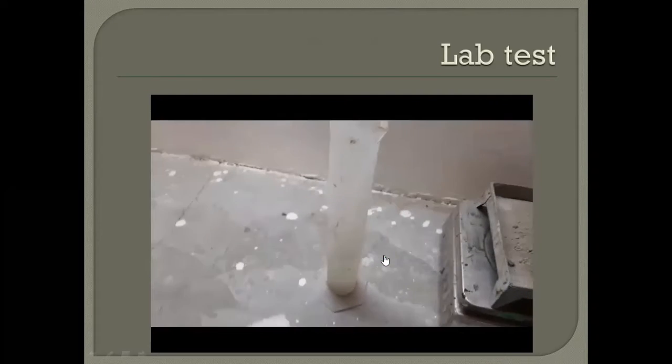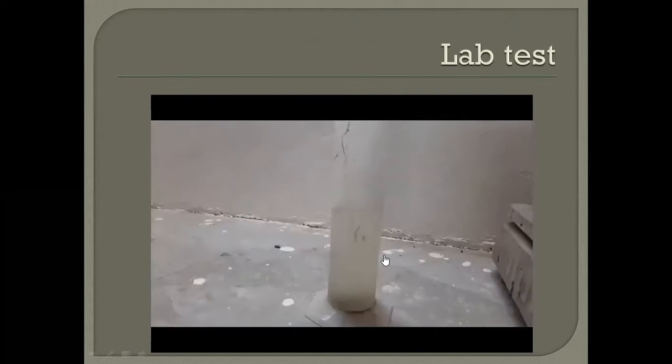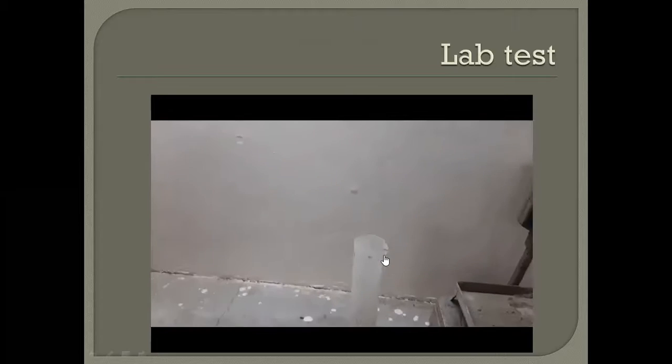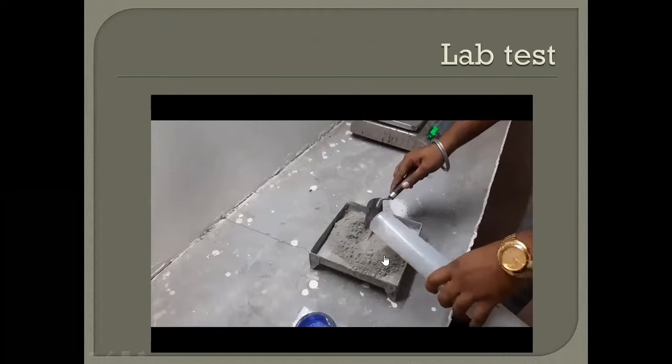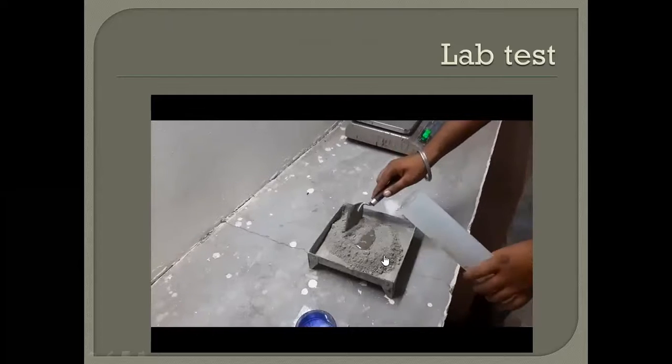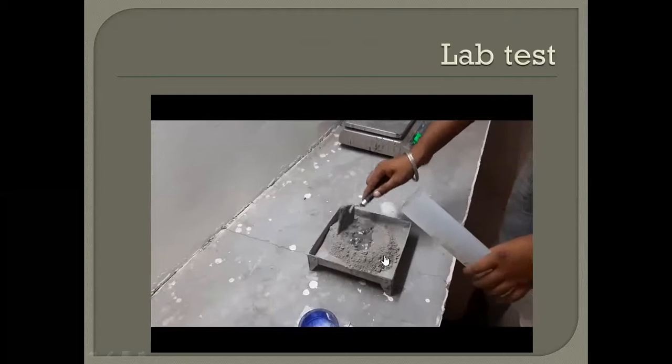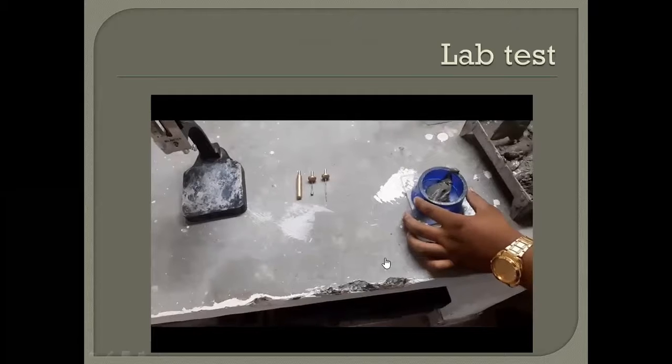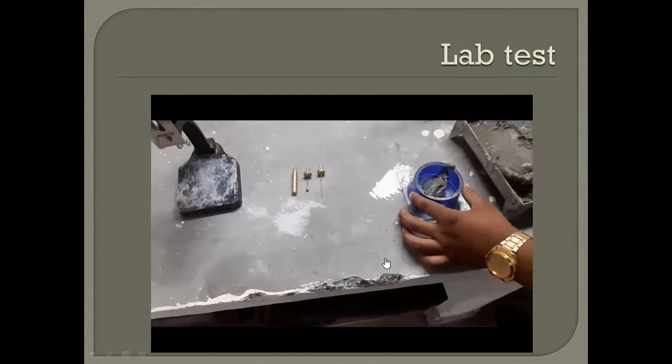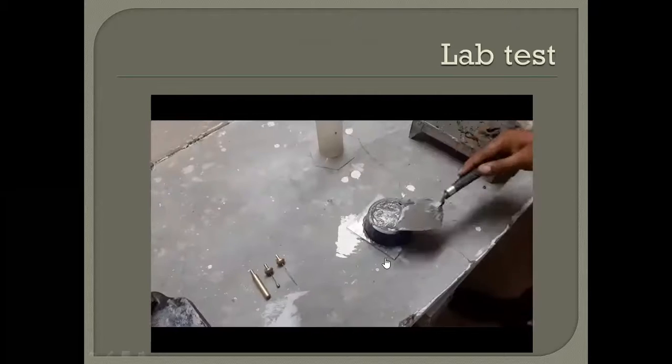First we add the water. We will start with 28 percent of water. If we are not getting our reading like 5 to 7 mm from the bottom of the glass plate, then we will increase that water percentage. First we are adding 28 percent, then we will add 30 percent, then 32 percent. So here we are performing this test with 28 percent.